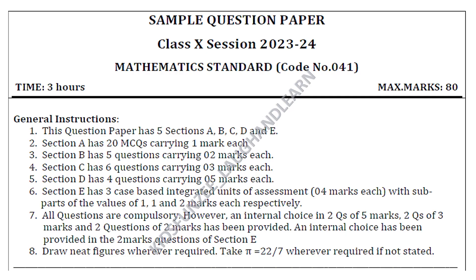These are the instructions given on the sample question paper. The time allotted is 3 hours and maximum marks are 80. This question paper has 5 sections: A, B, C, D, and E. Section A has 20 MCQs carrying 1 mark each. Section B has 5 questions carrying 2 marks each. Section C has 6 questions carrying 3 marks each. Section D has 4 questions carrying 5 marks each. Section E has 3 case-based integrated units with subparts of 1, 1, and 2 marks each respectively.